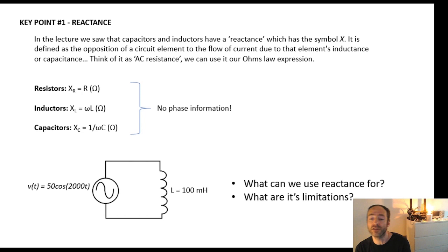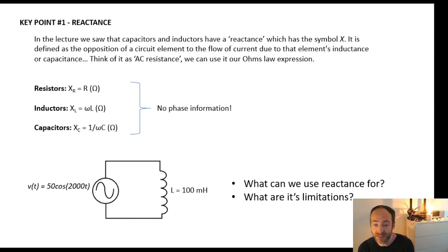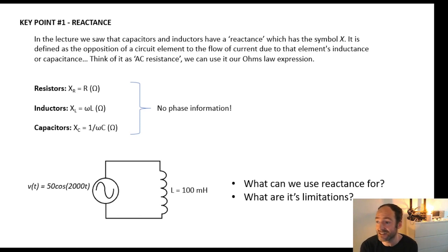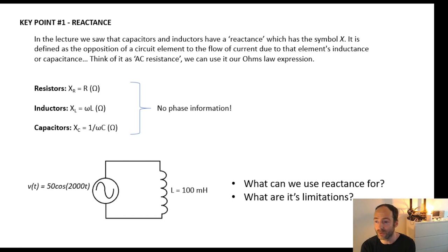We should all be familiar with resistance in a DC circuit. A resistor has a resistance measured in ohms, and it basically resists current flow — the bigger the resistance, the harder it is for current to flow around that loop. Reactance is no different really; you could almost consider it as resistance in an AC circuit. Capacitors and inductors have reactance, and we saw in our lecture video how we can calculate it.